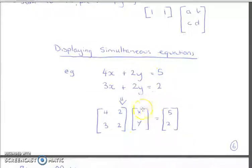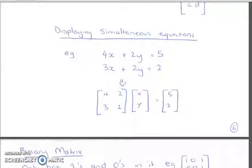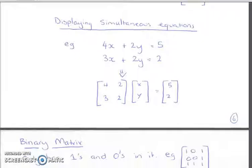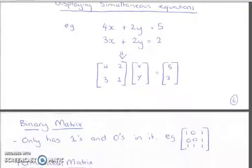Your second matrix tells you all the variables you're using. So x, y, and if there was a z, it would be a z down the bottom. Equals the answer to the two or the three equations simply placed there. So that's how we can display them in exercise 12. I'll go through how to solve those on your calculator.